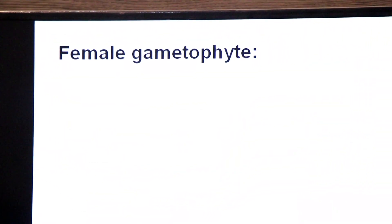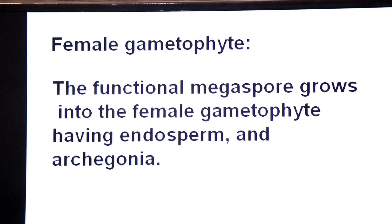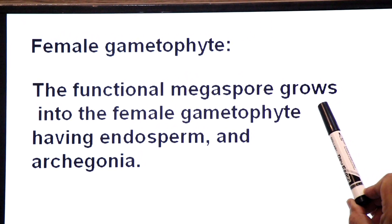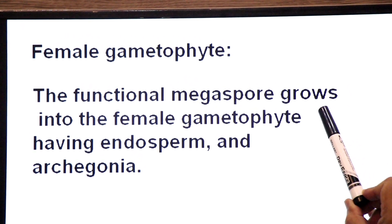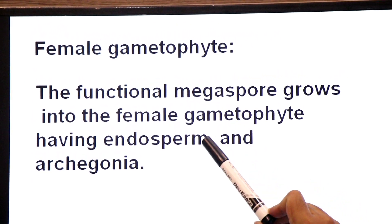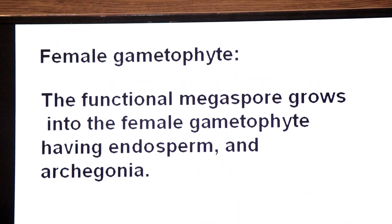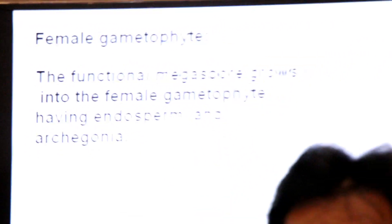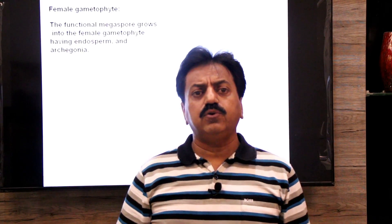The functional megaspore grows into the female gametophyte, which is made up of endosperm and 2 to 5 archegonia. The endosperm is a nutritive tissue that provides food to the embryo inside the seed.